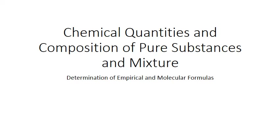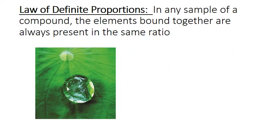In this PowerPoint, we're going to look at one more application of the law of definite proportions and our molar conversions, and cover how to determine empirical and molecular formulas from experimental mass data. The law of definite proportions states that in any sample of a compound, the elements bound together are always present in the same ratio. In the last PowerPoint, we looked at this ratio in terms of masses and percent composition. In this PowerPoint, we're going to look at it in terms of moles and formulas.